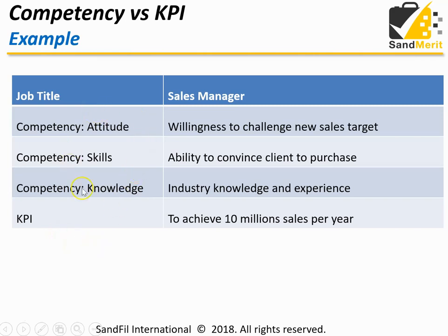Competency is the ability to perform. If the person does not have a good attitude, you will not be able to reach the sales target you expect. If the person is not able to convince the client to purchase, you will not be able to hit your sales target as well. You need knowledge and experience to be a good salesman. To achieve the 10 million sales target, you need to have good competency in place.